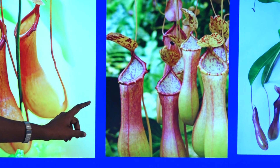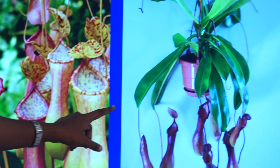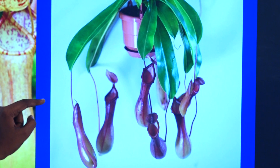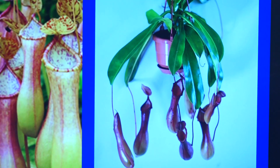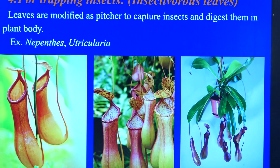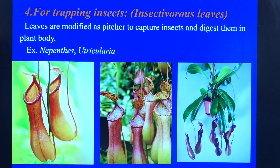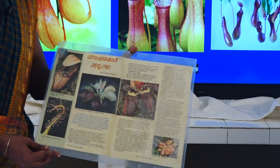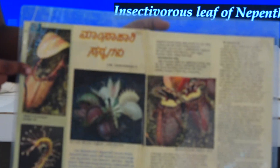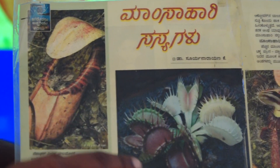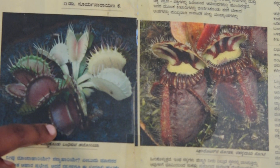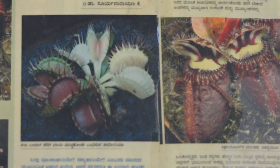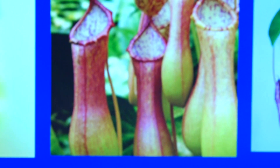We can see other pictures as well. If you see the chart, we can see nepenthes. This is the nepenthes. Next is another insectivorous plant, which is also for the same purpose, but the leaf is modified differently compared to nepenthes. So this is about the modification of the leaf. Thank you.